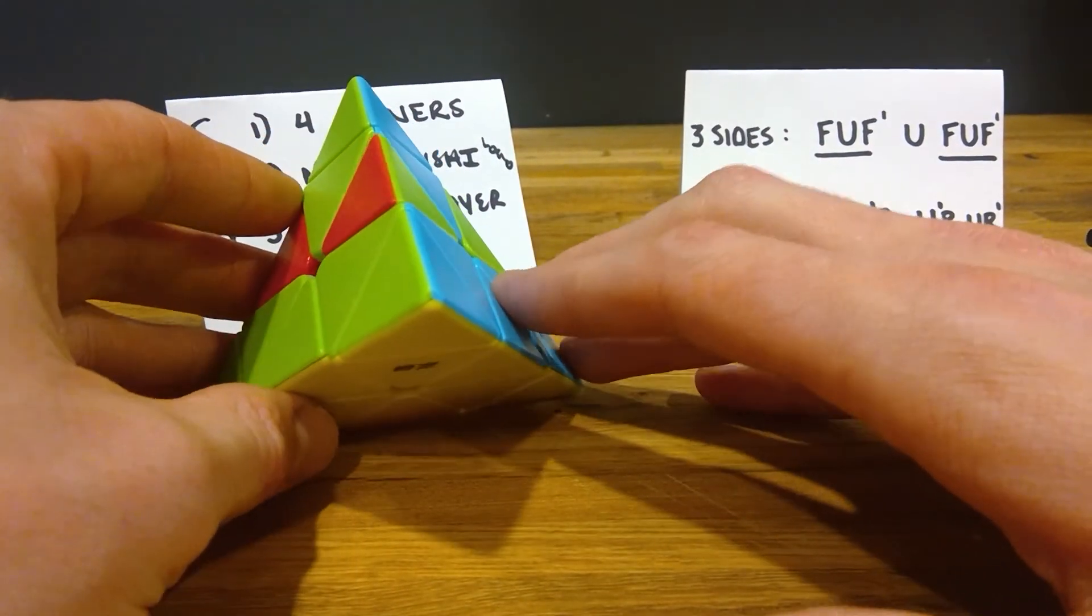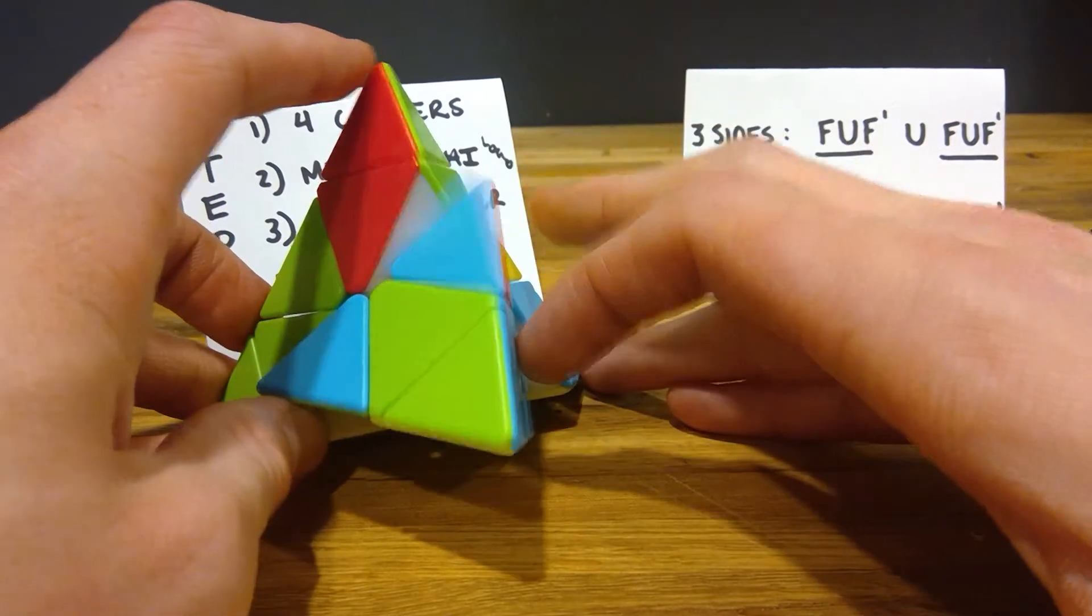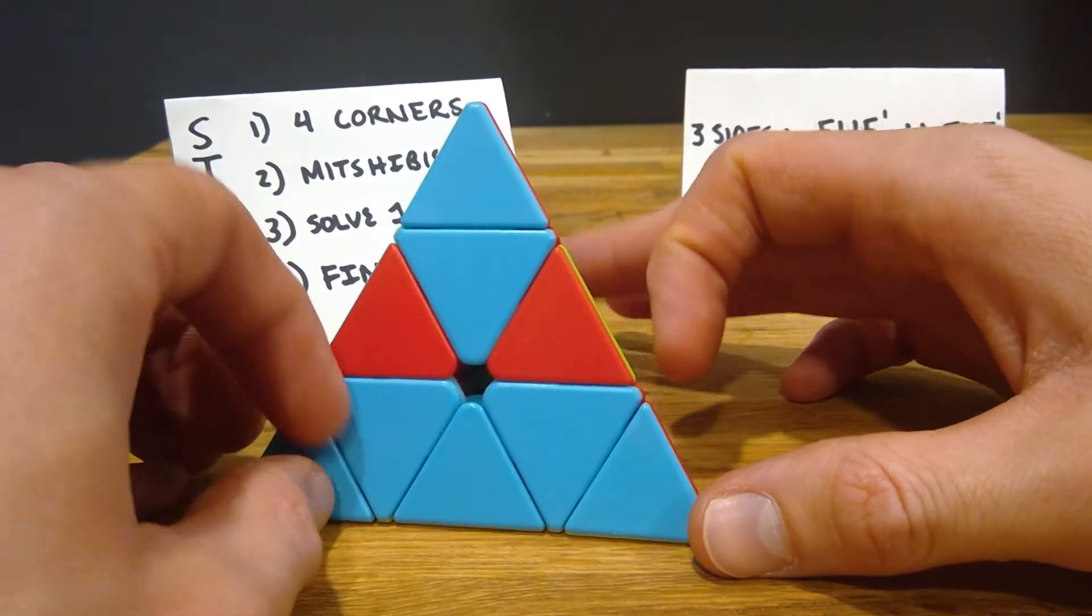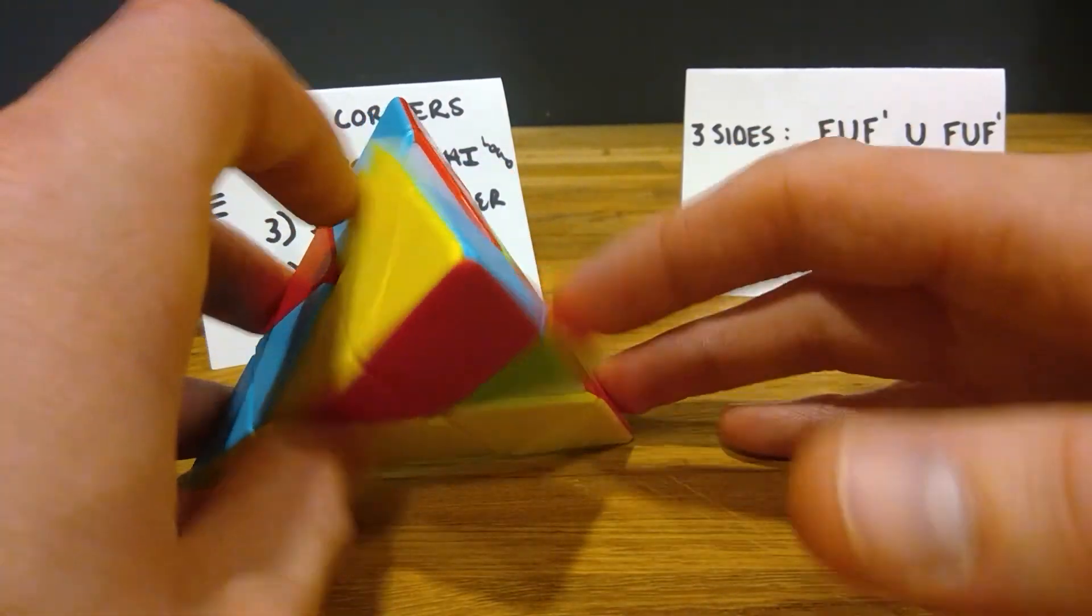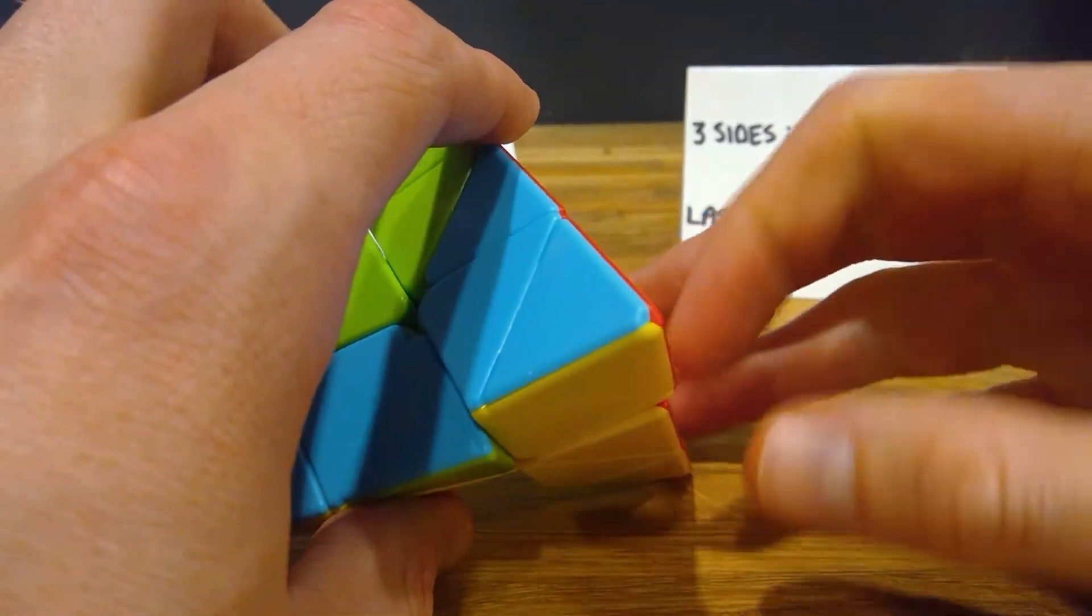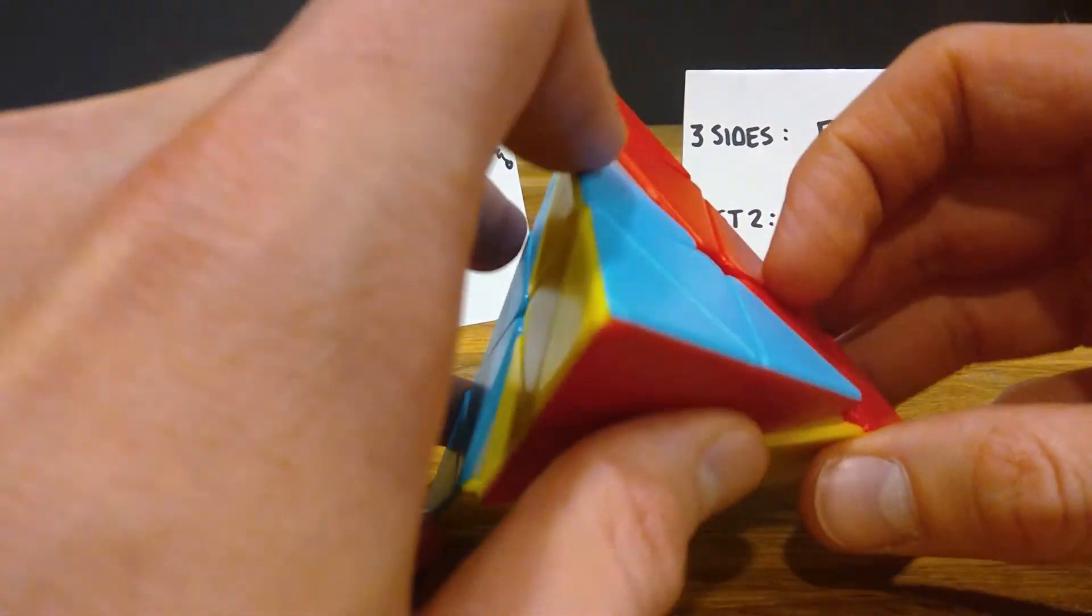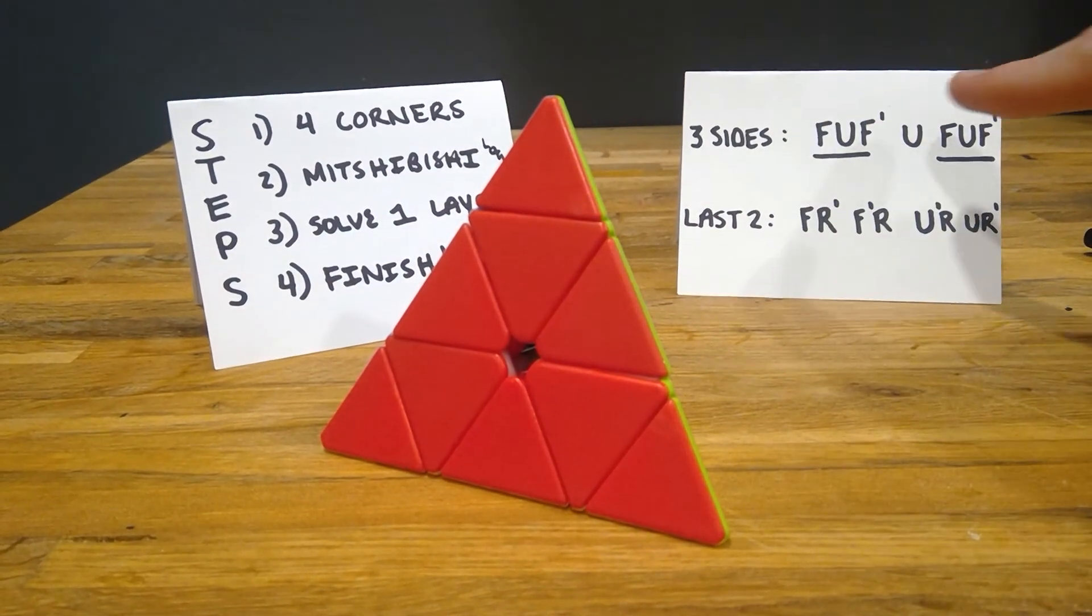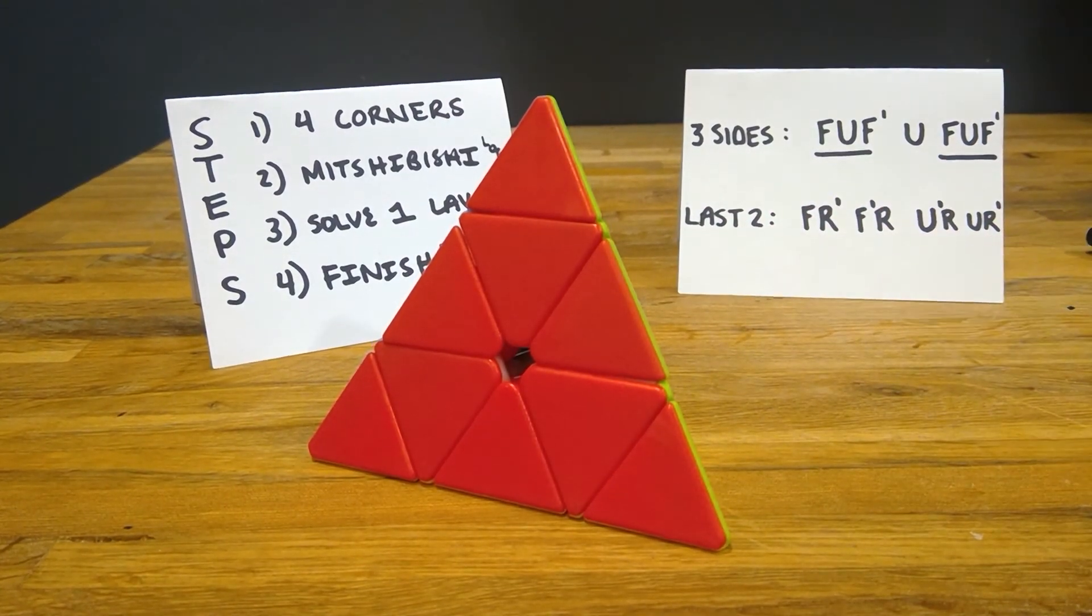Let's go ahead and do it together real quick. F, U, F prime, U, F, U, and then F prime. That got us nowhere. And that's okay. Sometimes you have to repeat this, I think. So, F, U, F prime, U, and then same thing again, F, U, F prime. And that solved it. Sometimes, last thing to talk about is sometimes you'll do this algorithm, the three sides algorithm, and it won't solve the cube. You'll get to last two, and you'll have to do that algorithm.